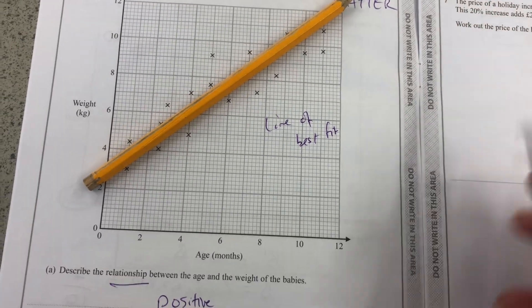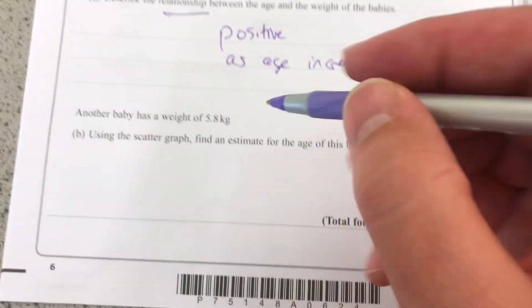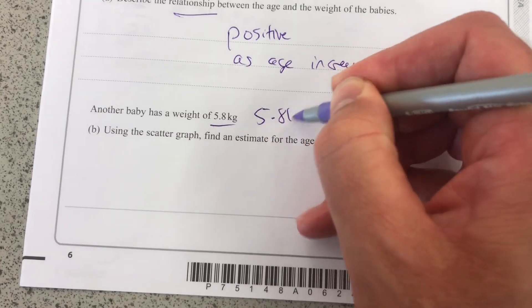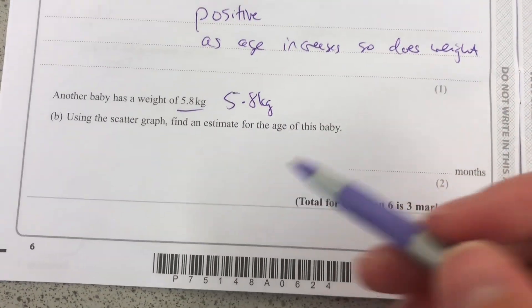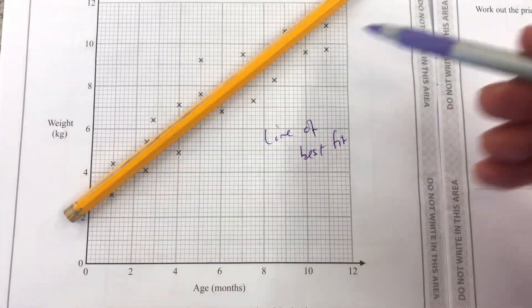And that's what they're asking in the second question. Another baby has a weight of 5.8 kilograms. So use the graph to find an estimate for the baby. I'm just going to use this as my line.